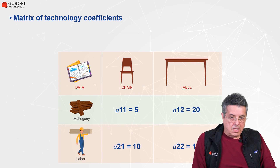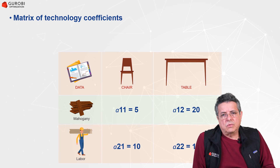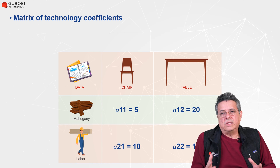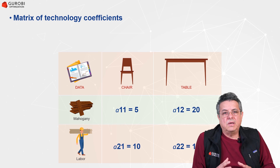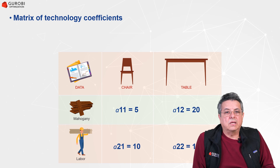We can represent all this information in terms of a table. In mathematics, this type of table is called an array. In this particular case, we have a two-dimensional array where the rows represent the set of resources and the columns represent the set of products.